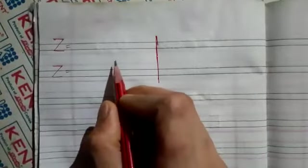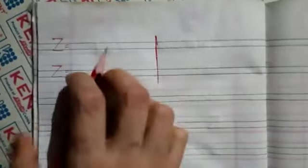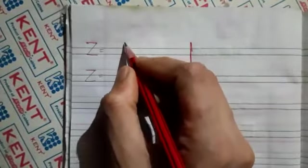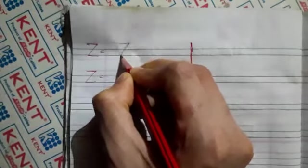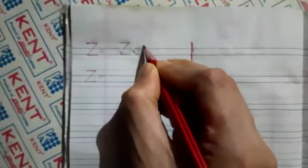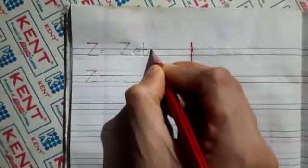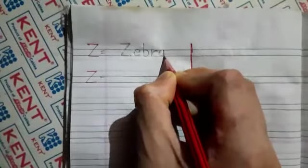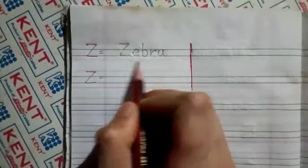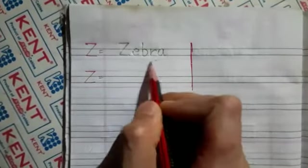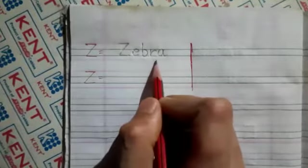Next word is Z. Let's see two words for letter Z. First word is Z E B R A, zebra. Zebra means zebra.